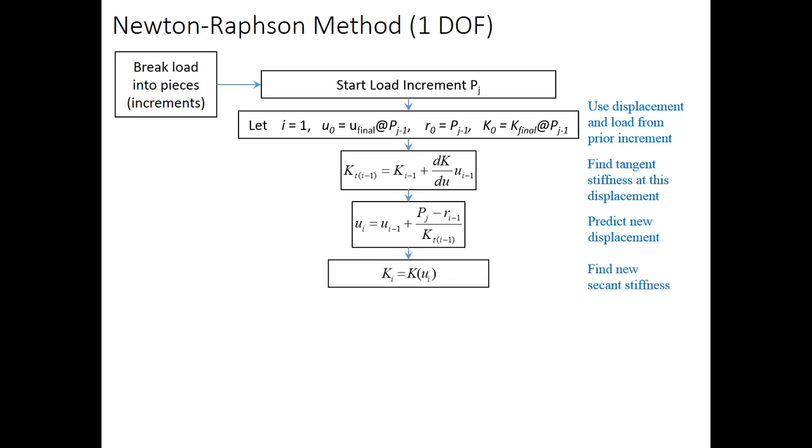Once we have the displacement for our first iteration, we can go and calculate our secant stiffness for the first iteration. So, K sub I. That's just evaluating the stiffness at the new displacement.